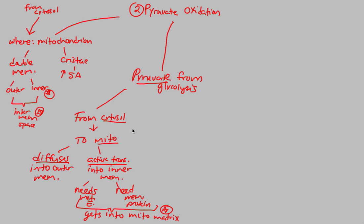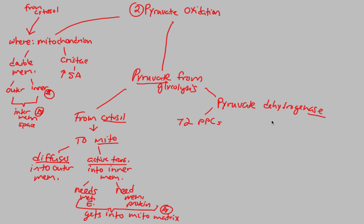Let's look at pyruvate dehydrogenase. Pyruvate dehydrogenase is one of the most amazing and complicated enzymes in the world. We remember that enzymes are proteins — you can tell it's an enzyme because it ends in -ase. Specifically, this enzyme is amazing because it's actually 72 polypeptide chains. If you remember quaternary structure of proteins — hemoglobin was four polypeptide chains — this pyruvate dehydrogenase complex is 72 polypeptide chains forming a quaternary structure, which shows you the massiveness of this protein.